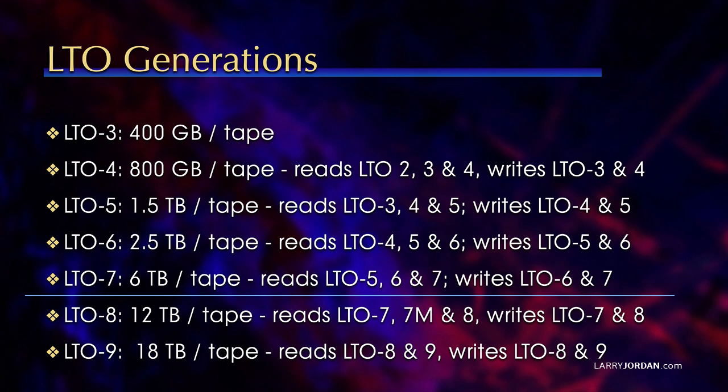In addition to supporting the current version, let's look at LTO 7 as an example — just above the blue line. It stores 6 terabytes per tape. It reads LTO 5, 6, and 7 tapes; so if you put an LTO 5 tape in, it can read it. It'll write LTO 6 and 7 — so it reads back two versions and writes back one version. This is important because, let's say you buy an LTO 8 drive and then a year from now you want to upgrade to LTO 10. LTO 10 will read 8 and 9 and write 9 and 10, which means all of your LTO 8 tapes can be put into an LTO 10 drive and you're protected for the future.